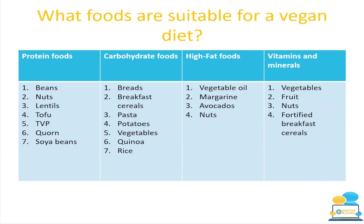Protein foods suitable for vegan and vegetarian diets include beans, nuts, lentils, tofu (made from soya milk curds), TVP (textured vegetable protein), corn and soya beans. Carbohydrate foods include breads, breakfast cereals, pasta, potatoes, vegetables, quinoa and rice. High-fat foods include vegetable oils, margarine, avocados and nuts. While avocados contain some saturated fat, they are better for the body than saturated fats from meat.